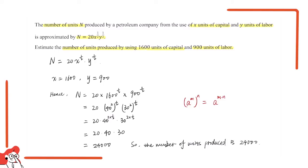Well, to recap this process, firstly, we have to read the question carefully and try to get the information from it. So after we know the equation for the number of units produced, we can substitute the units of capital and labor given by the question, which are 1600 and 900. Hence, we could solve for n. So the final answer is the number of units produced is 24,000.